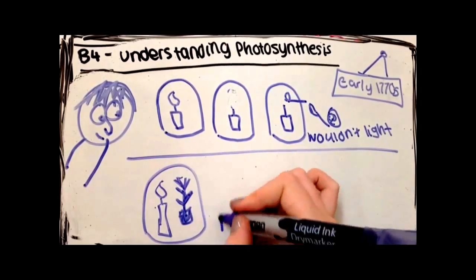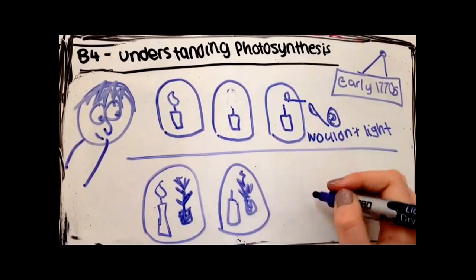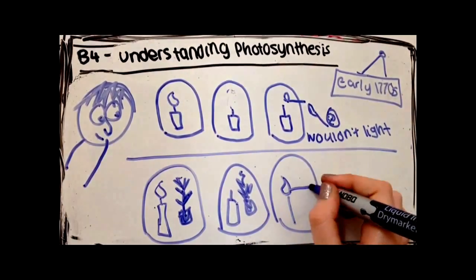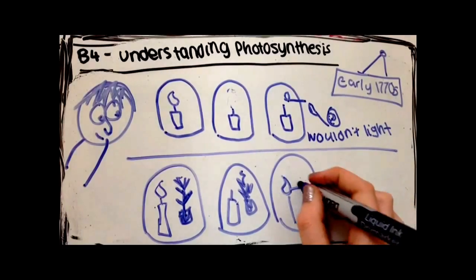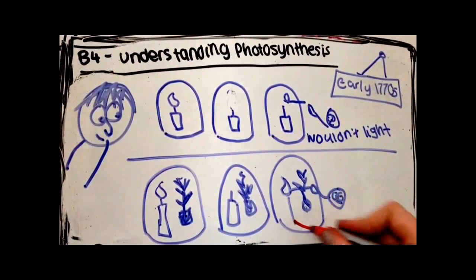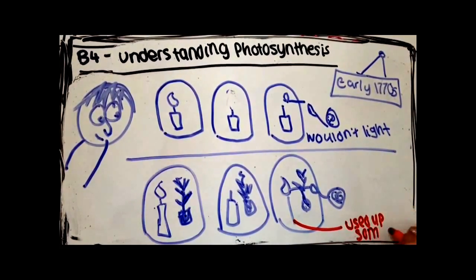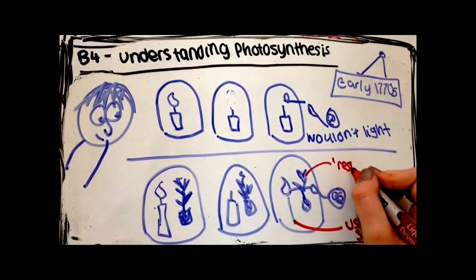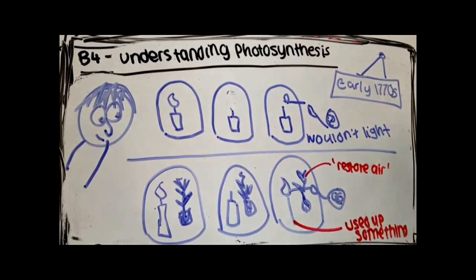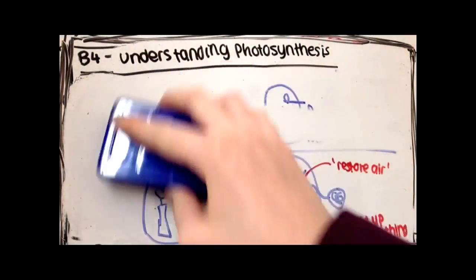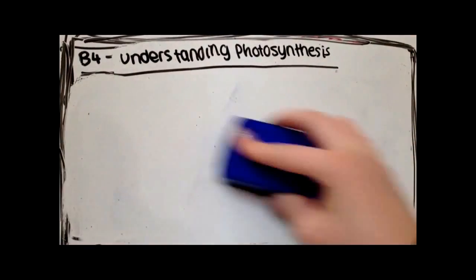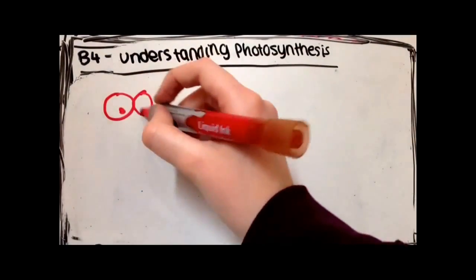He then placed a burning candle and a living plant in the container. The flame went out after a short time, but after a few weeks, the candle could be relit within the container. He decided that the burning candle used up something in the air and that made the flame go out, and that the living plant restored the air so the candle could burn again.